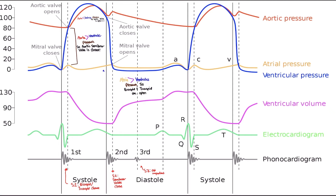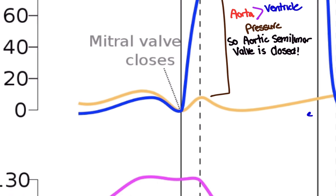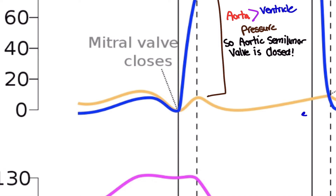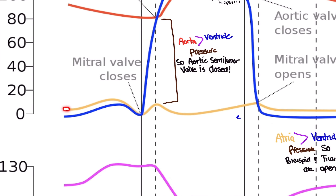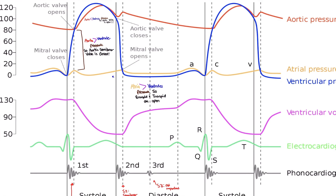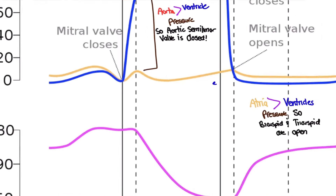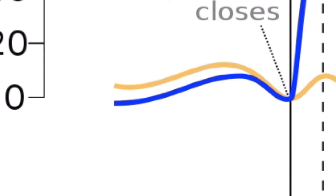I'm going to take this really slowly. The first thing you'll notice is the blue line — that's our guide, our marker. You'll also notice a tan-looking line, which is the atrial pressure. Notice that the atria pressure is higher than the blue ventricular pressure line. This is important because it's telling us something — it's all about pressures.